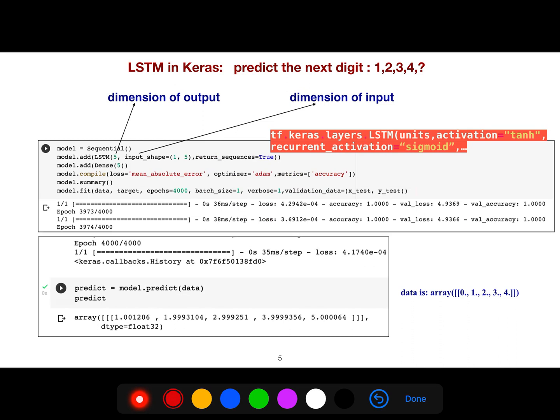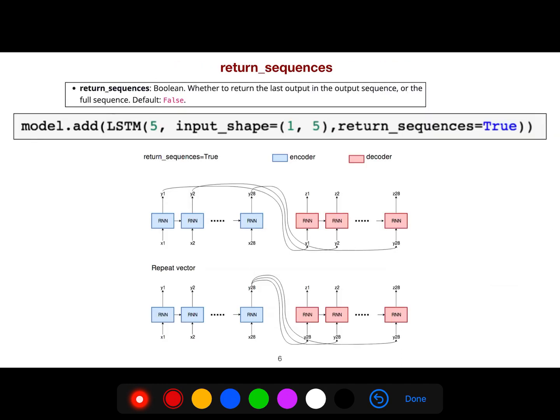In Keras, you define your model, add the layers that you want, then compile it and finally fit it. For prediction at inference time, you just say predict your data that you want to predict and you return the sequences.